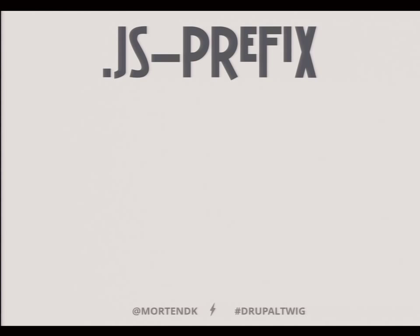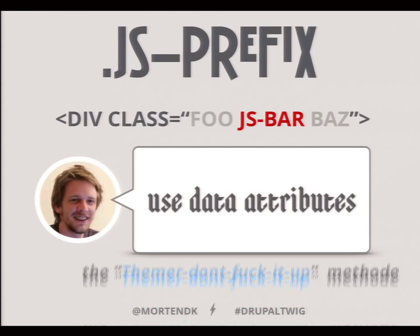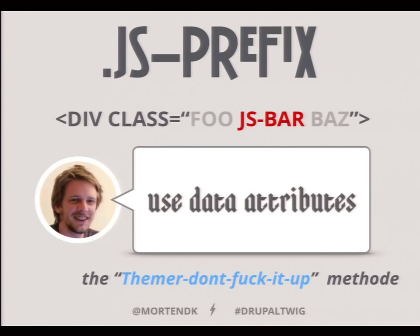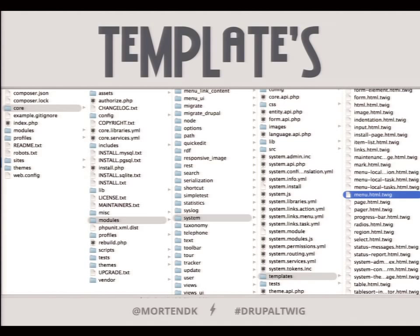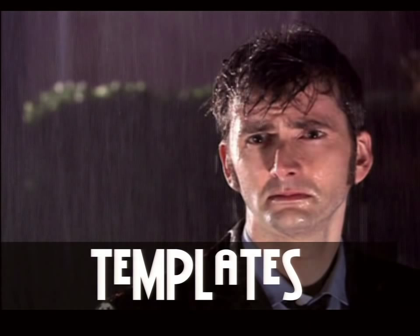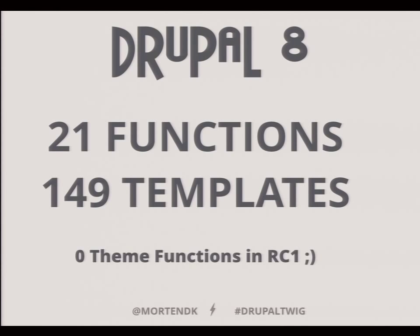JS prefix: if you have a class that JavaScript needs, Drupal is now going to prefix that with 'js-'. So you'll never again, when you kill all the classes from Views, accidentally make the AJAX call not work anymore. What's also being done is using data attributes instead — this is the themer's 'don't remove this class' signal, but with data attributes it makes it secure. Theme functions are dead — I am so sorry for that. We have templates instead. In Drupal 7 we have 55 templates and 154 different functions. In Drupal 8 right now we have 21 functions. We are hopefully going to have zero theme functions when we go to Release Candidate 1. At last count we have 149 templates. We're trying to minimize these.